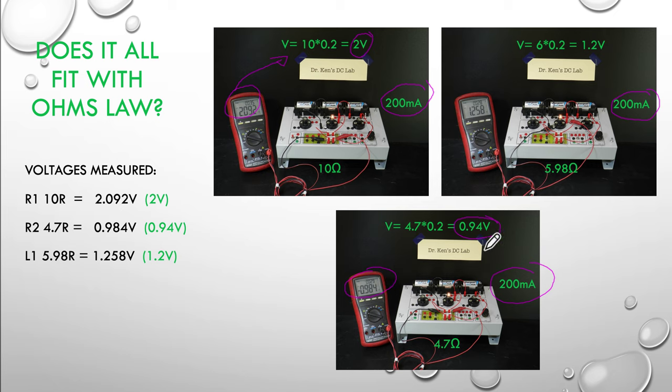Just to hammer it completely home, got 1.28 here and we get 1.2 calculated for our 6 ohms at 200 milliamps, so yes it does all fit with Ohm's law. R1 measured 2.092 and it calculated 2 volts. R2 measured at 0.984 and it calculated 0.94. The lamp calculated at 1.25 and it was 1.2. So again, tick tick tick, our Kirchhoff's law works and our Ohm's law works around our series circuit.